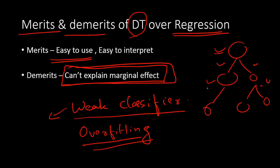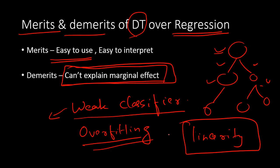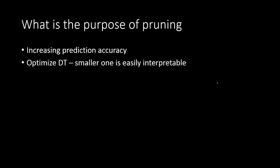Another important point: linear regression assumes linearity in the relationship, whereas decision tree doesn't assume any linearity. That's one good thing about decision tree — it takes care of non-linear relationships or non-linear patterns in your data, as opposed to linear regression which only captures the linear relationship between your predictors and target variable.